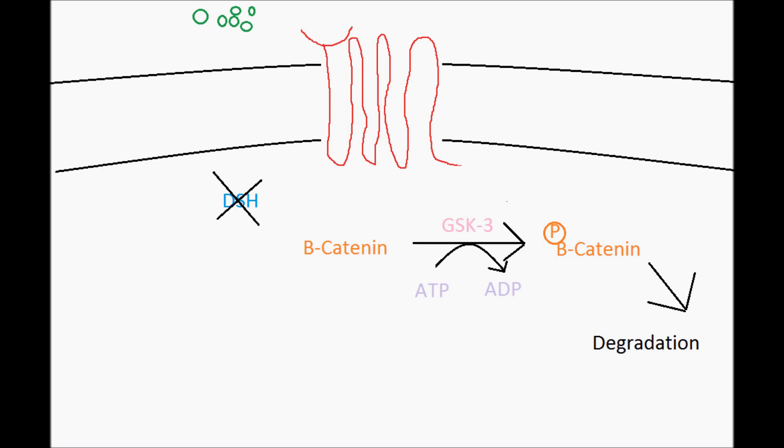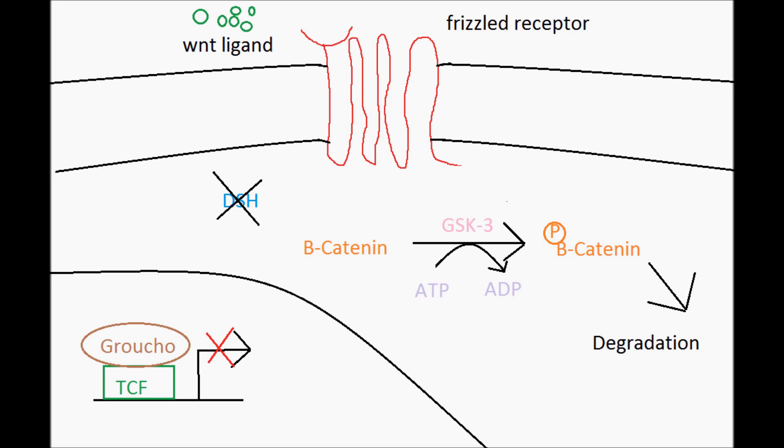This results in no transcription because within the nucleus, TCF will be bound to Groucho, which is a co-repressor, so no transcription will occur.